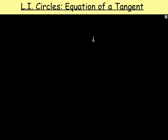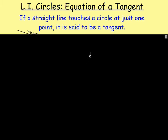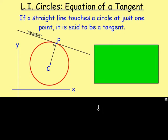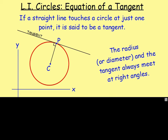The first thing we need to know is what is a tangent in relation to a circle. If a straight line touches a circle at just one point, it is said to be a tangent — just like this. You can see the straight line is touching the circle just at one point, touching point P, so that straight line would be the tangent. The magical thing about the tangent is that where it meets, if you draw a line from the centre to that point, that would be a radius, and the radius meets the tangent at right angles — or the diameter as well.